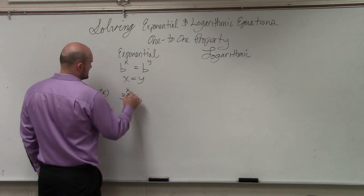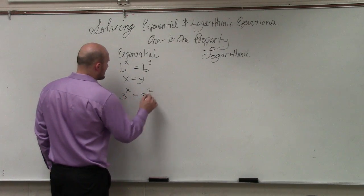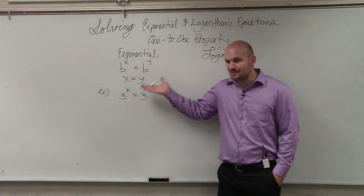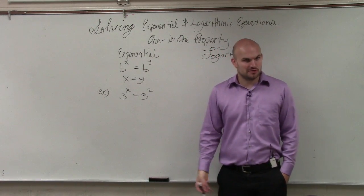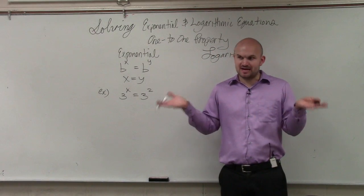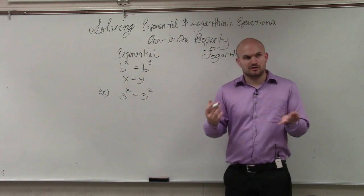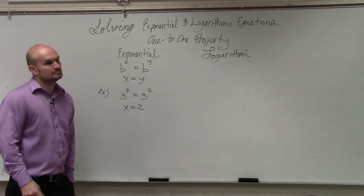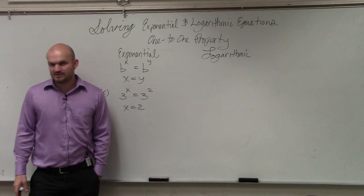If I had 3 raised to the x equals 3 squared, we don't have to do too much thinking here, right? What number does x have to be? 2. So when you have the bases are exactly the same and you have an exponent equal to another exponent, you can set them equal to each other and just say x is equal to 2. Does that make a little bit of sense?